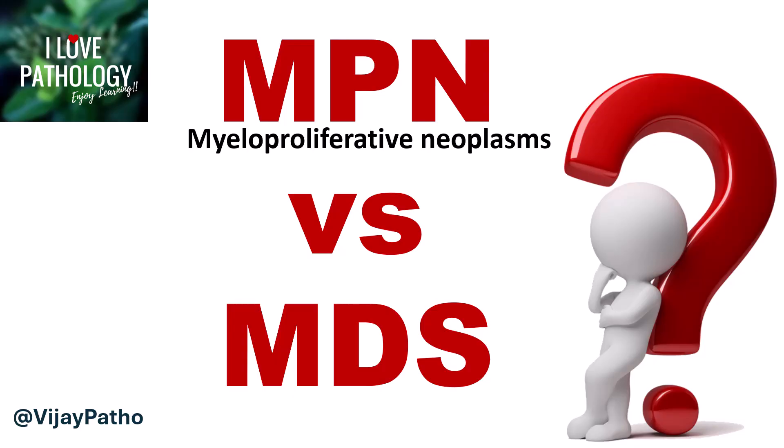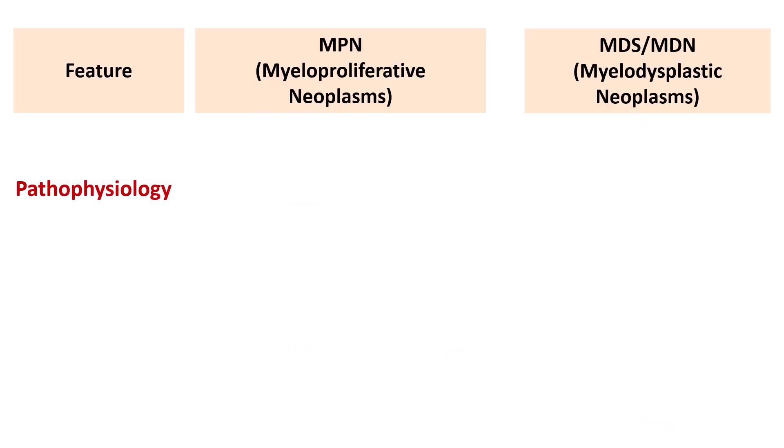MPN stands for Myeloproliferative Neoplasms, whereas MDS stands for Myelodysplastic Neoplasms. Though it is called Myelodysplastic Neoplasm, the abbreviation is still MDS, which was earlier referred to as Myelodysplastic Syndrome. We will try to understand the differences between these two by means of various pathognomonic features, starting with the pathophysiology.